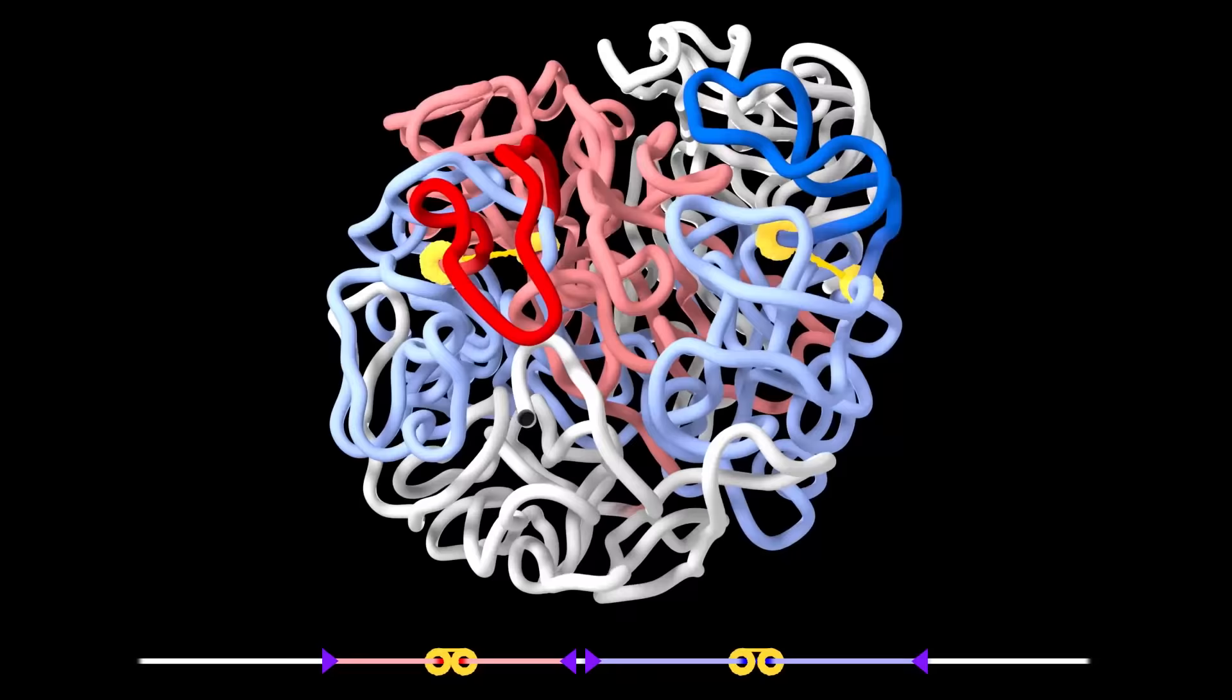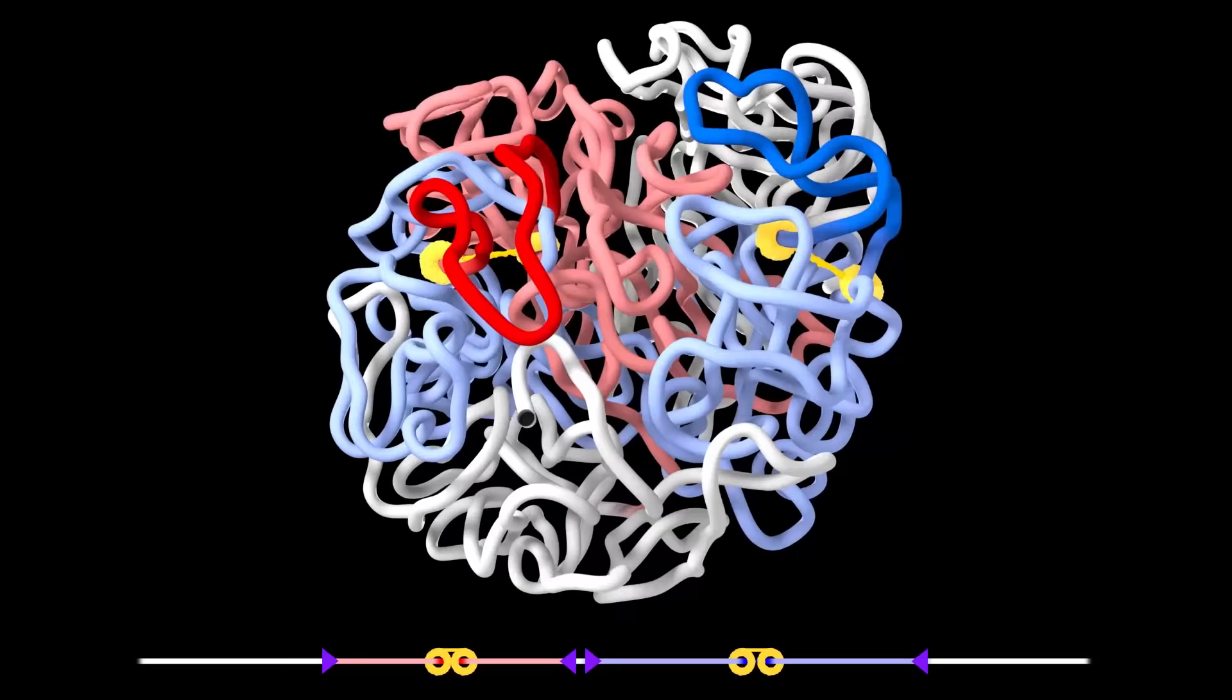In this physical simulation, you can see how the extrusion of two loops leads to the formation of two spatially segregated domains.